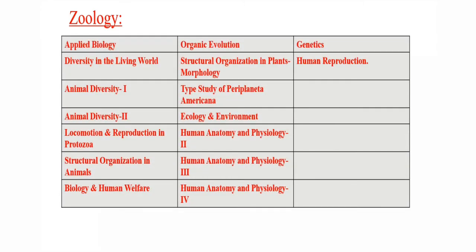Next is Zoology. Applied biology topics include diversity in the living world, animal diversity 1, animal diversity 2, locomotion, reproduction, structural organization in animals, human welfare, organic evolution, and plant morphology type study.